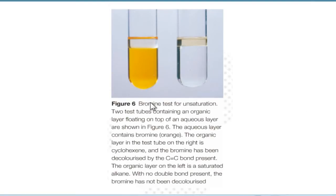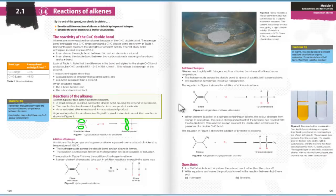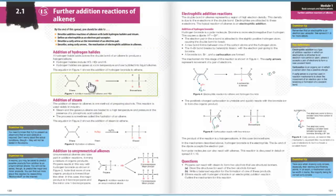This is the bromine test for unsaturation. If you look on the right-hand side, there's an aqueous layer, and this indicates that there is an organic compound present. If there's no double bond present, then the bromine does not decolorize. It just stays orange.